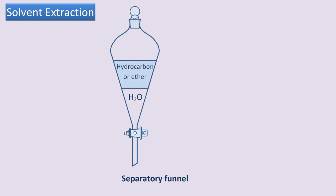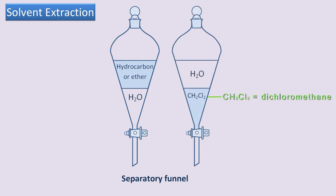A halogenated hydrocarbon, such as dichloromethane, however, is more dense than water, so if dichloromethane is used in an extraction with an aqueous solution, the water layer will be on top.